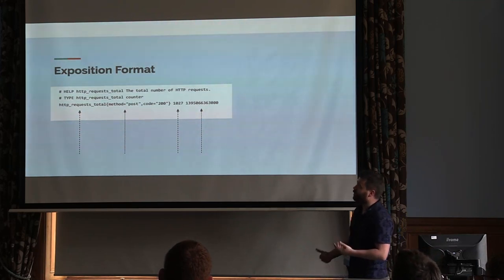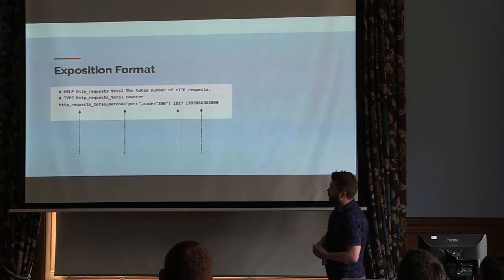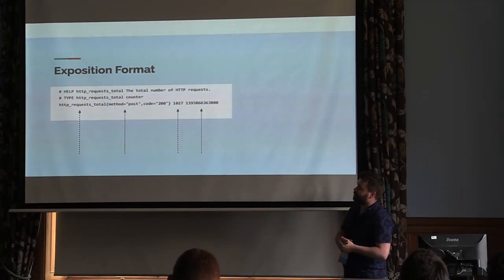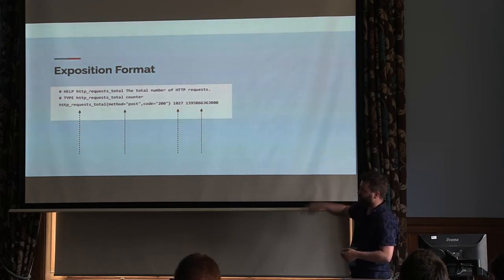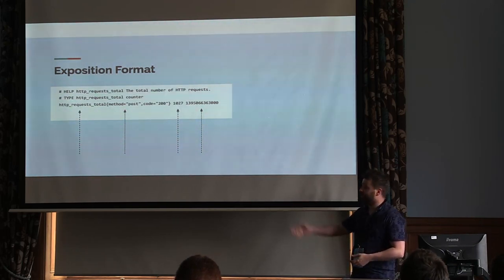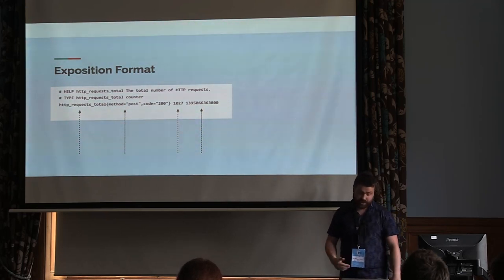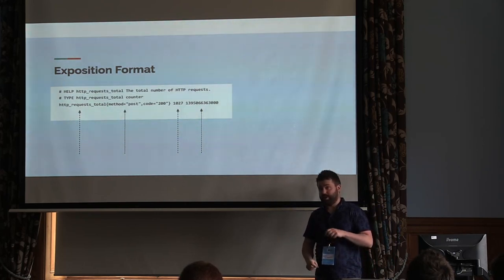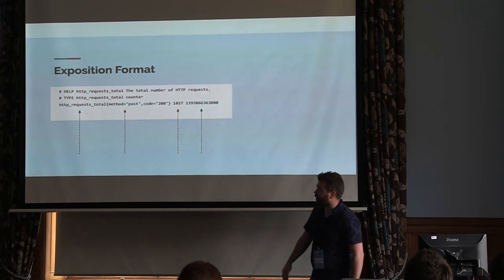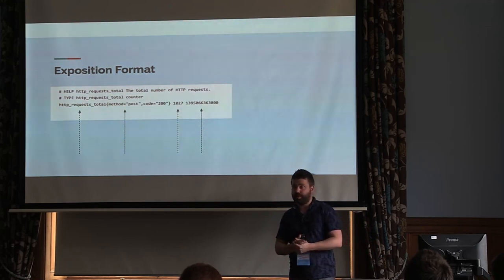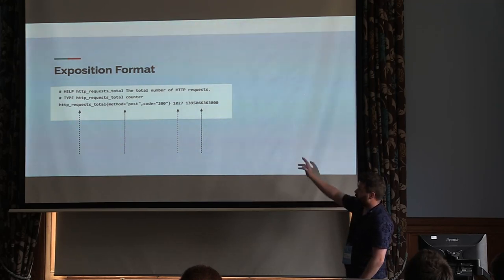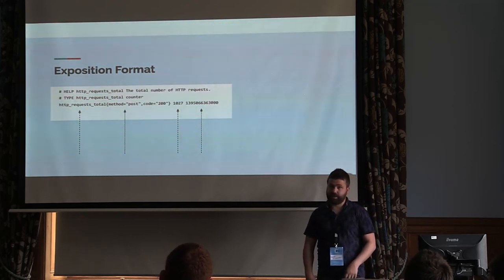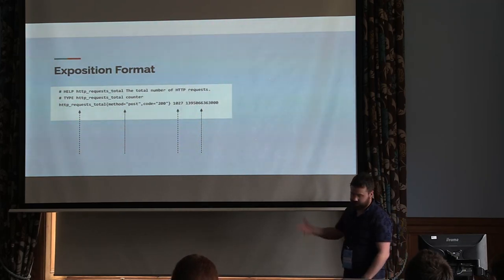What do those endpoints actually expose? There is an exposition format that Prometheus supports. There's a helper line that gets bubbled up to the UI later. You have to define a type — we'll cover the different metric types in a second. Both of those are listed as comments. Then we call out the metric we want to create — this is defined by you. For example, HTTP request total. Everything inside the curly braces are just labels to help you drill down in granularity for your queries. The first value, say 1027, is the actual value for that metric at that point in time, and the last is the timestamp. Prometheus is a time series database optimized for indexing according to time values.